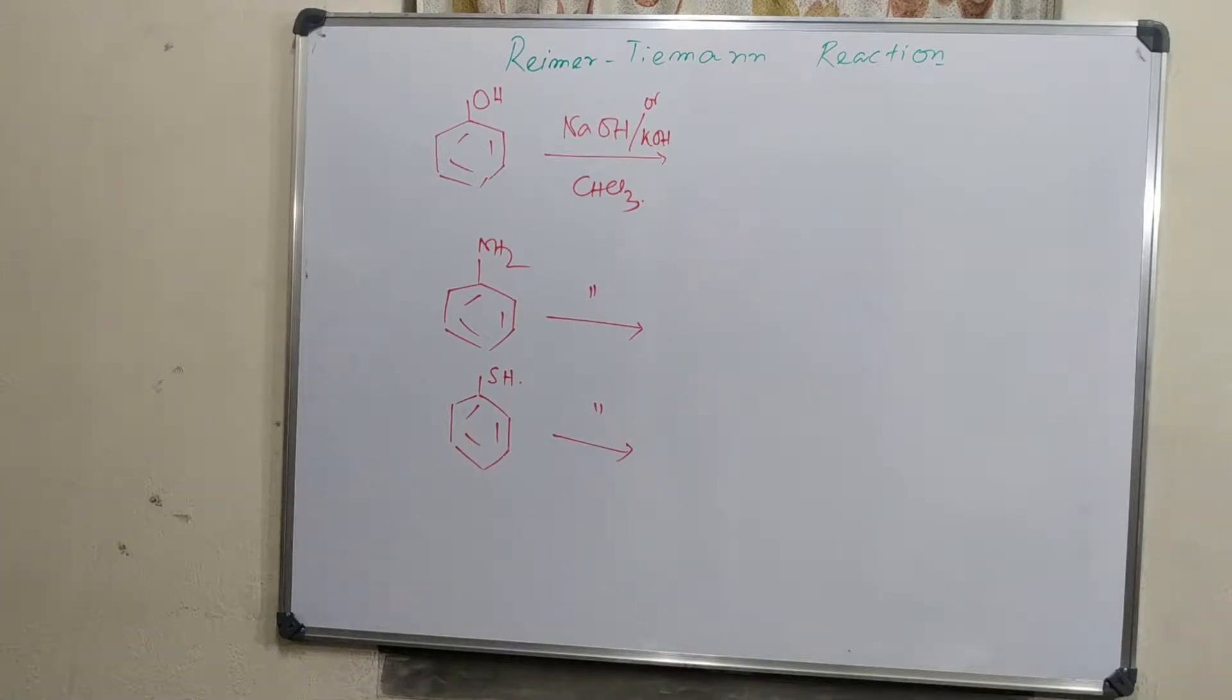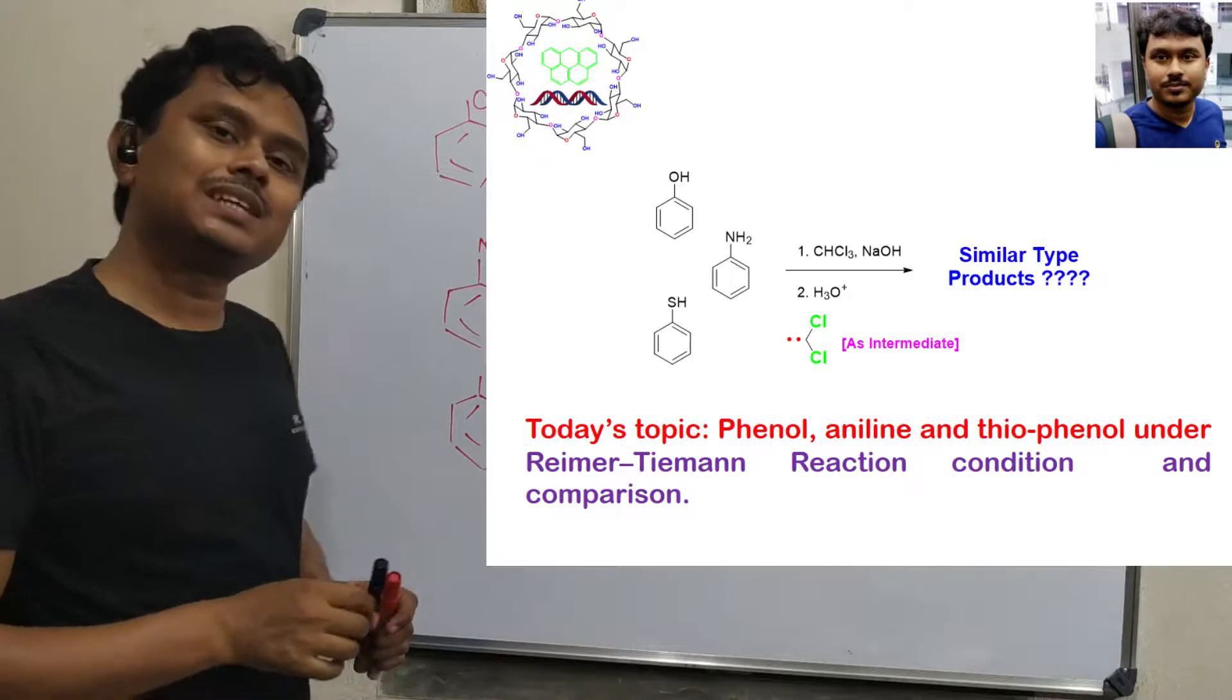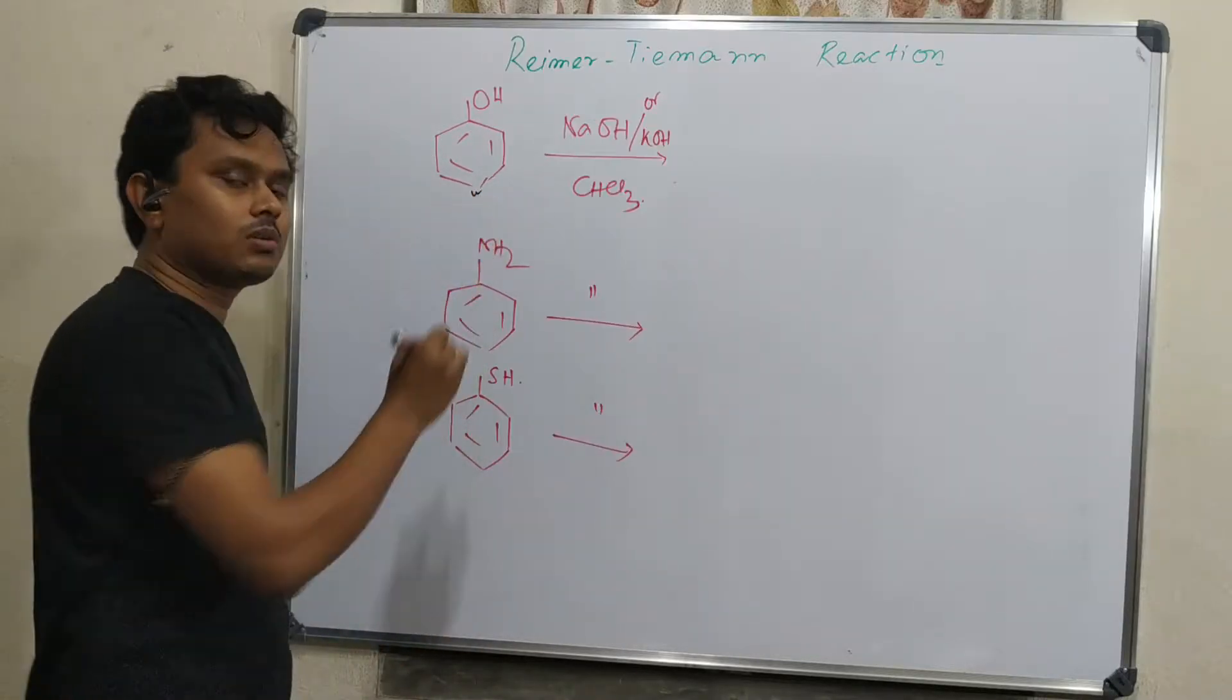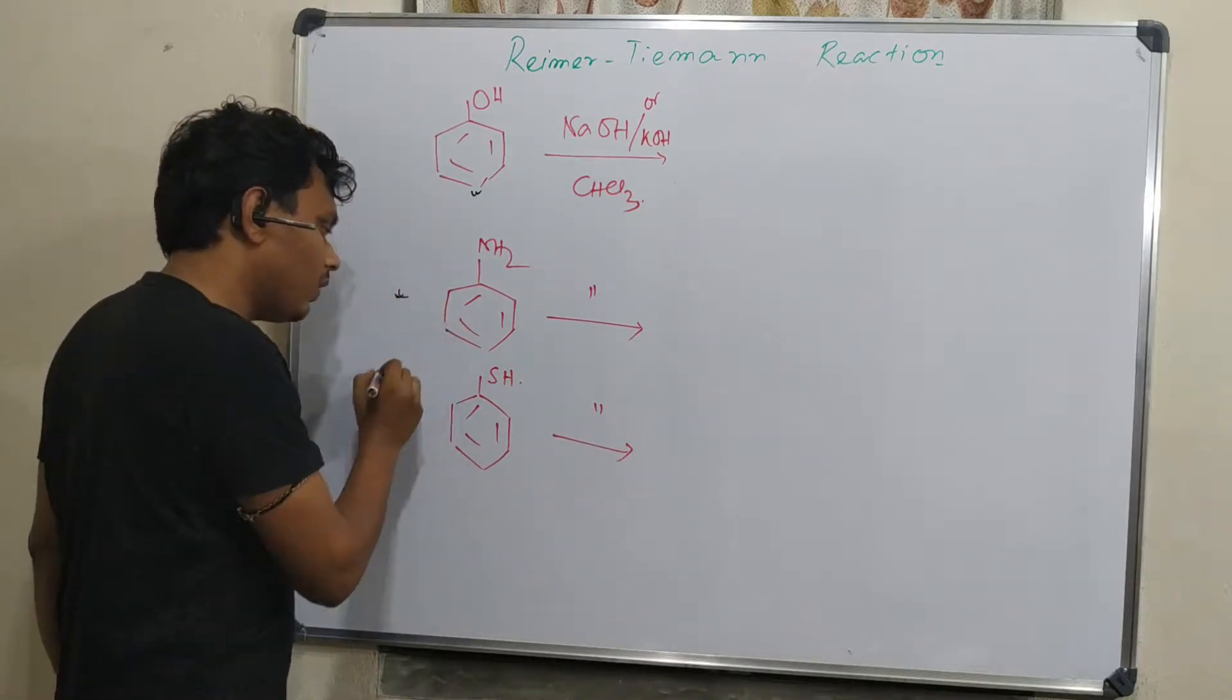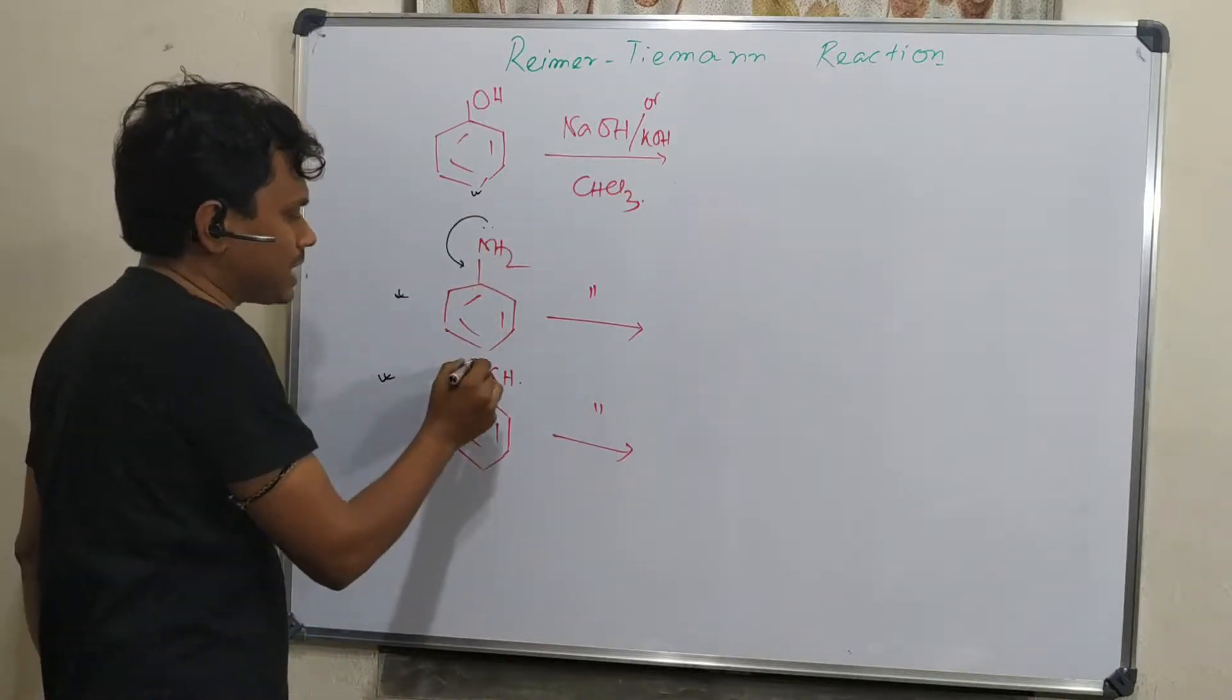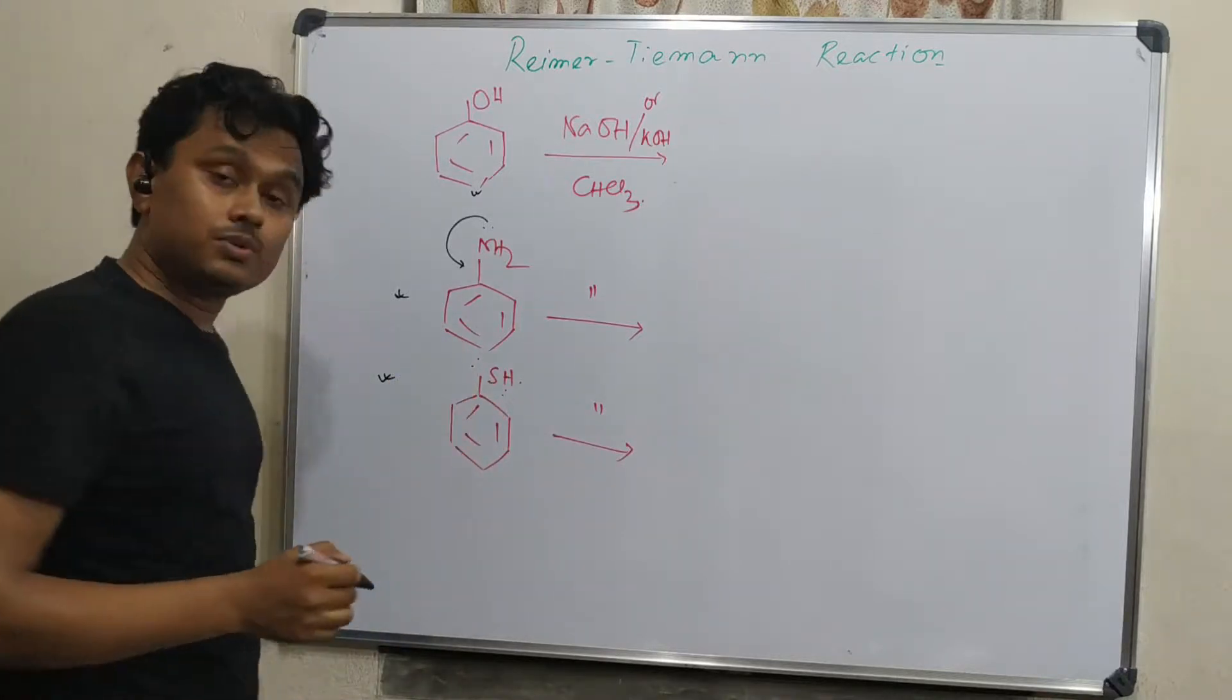Okay, now we will discuss some other examples. For example, I have told that this Reimer-Tiemann reaction happens on electron-rich nucleus, that is phenol. So consequently the question comes: will it be possible in case of aniline or thiophenol? Because we know due to resonance, this delocalization, aniline or thiophenol both are electron rich. So, will it produce the same product?